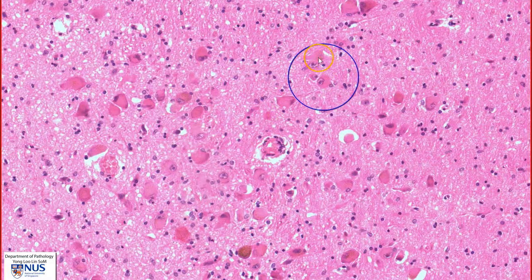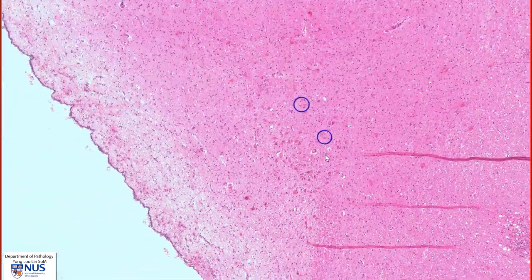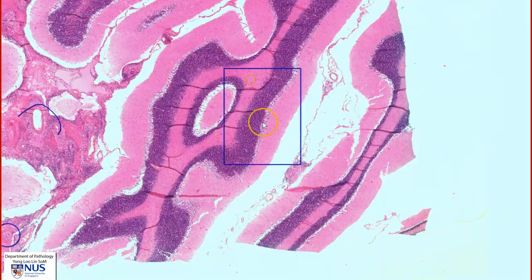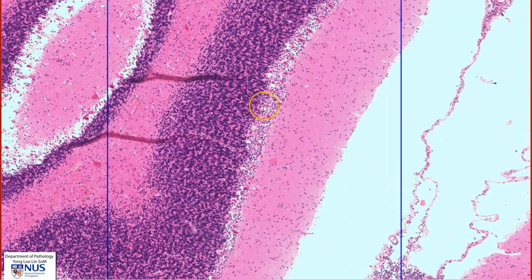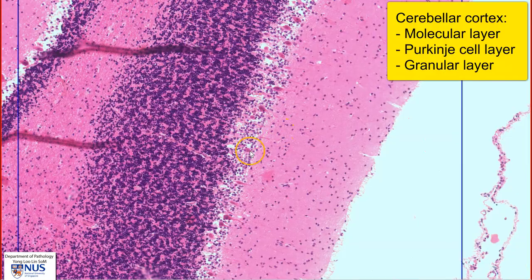Here again we can see some neurons. Moving on to the cerebellum — the cerebellar cortex is composed of three layers: the molecular layer, the Purkinje cell layer, where we can see very large neurons, and the very cellular blue-appearing granular layer.